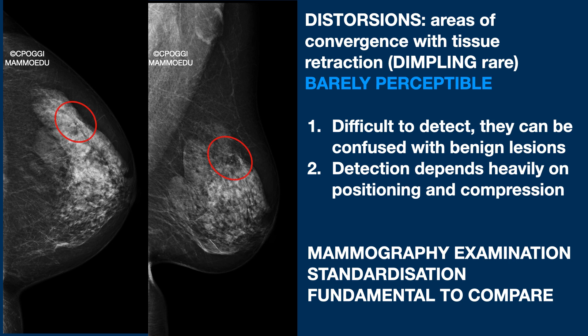Distortions are areas of convergence with sometimes barely perceptible tissue retraction. They are generally difficult to detect, but we can say that their diagnosis depends heavily on the work of the breast radiographer for positioning and compression. This is why standardizing the radiography work is so important.